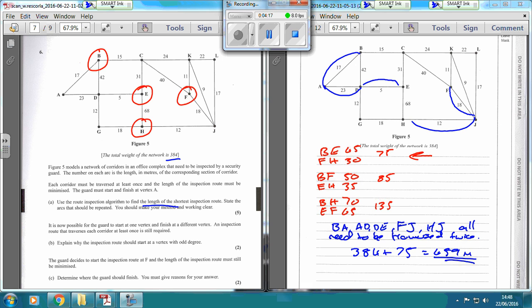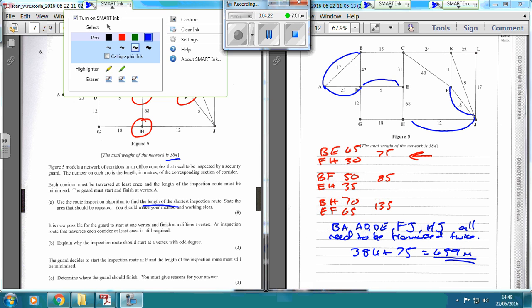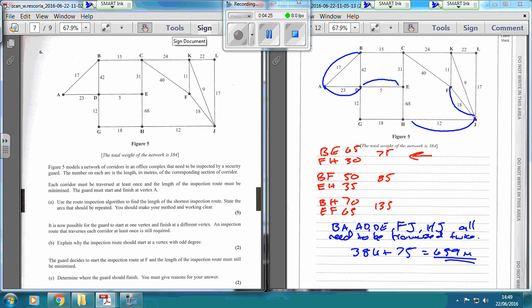It's now possible for the guard to start at one vertex and finish at another vertex. What it's saying is that we can now be semi-Eulerian or semi-traversable. Explain why the inspection route should start at a vertex with odd degree. The way I would go about explaining this one is, okay, so let's do this over here.